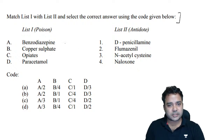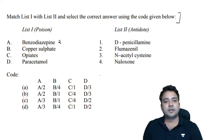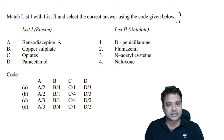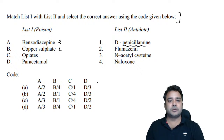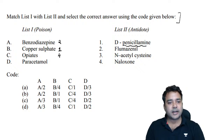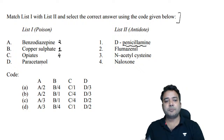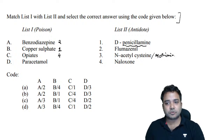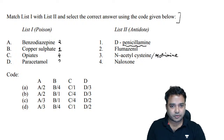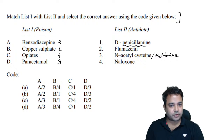Benzodiazepine antagonist goes with flumazenil. Copper sulfate can be chelated by penicillamine. Antagonist for opioids — a recent PG exam question — IV naloxone or nalmefene can be used. A specific antidote for PCM or acetaminophen toxicity is N-acetylcysteine or methionine; they help in replenishing the glutathione stores.